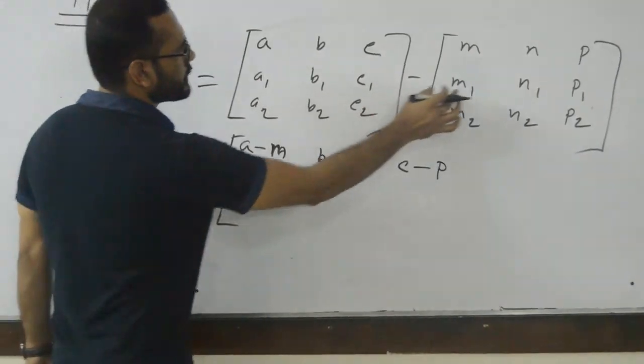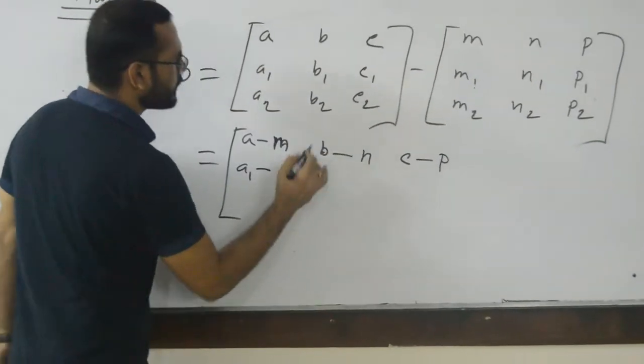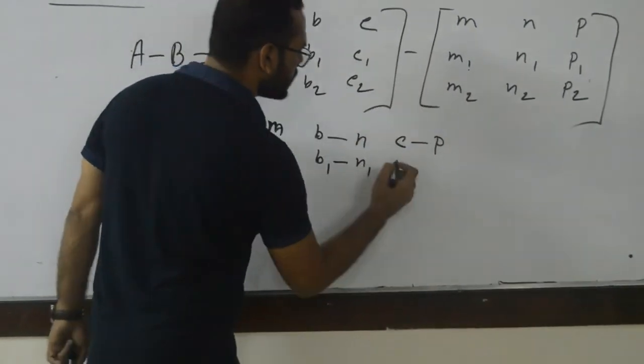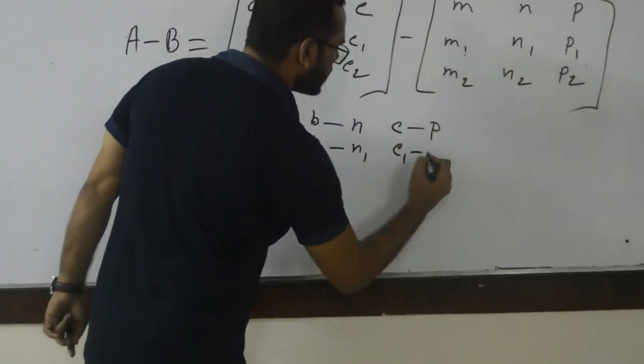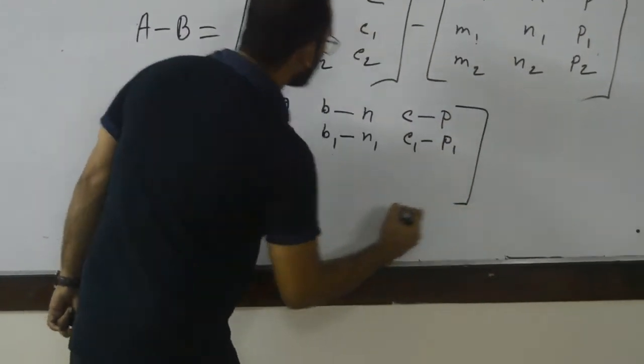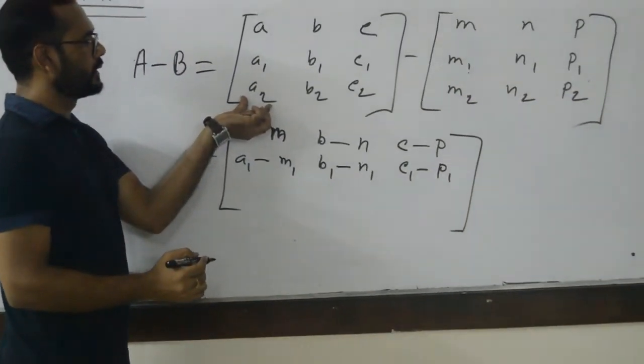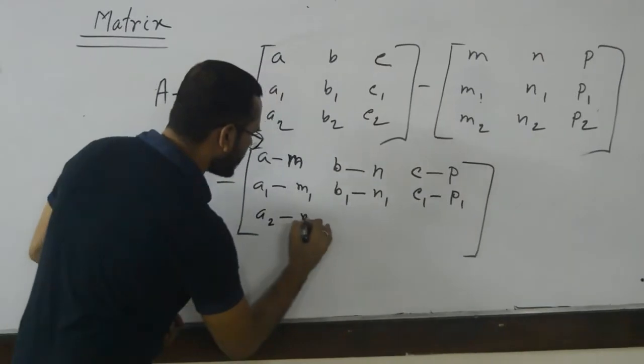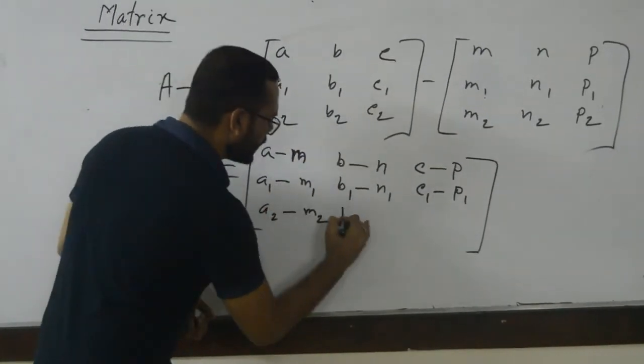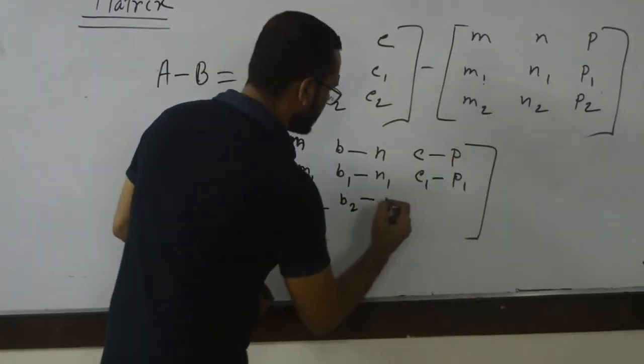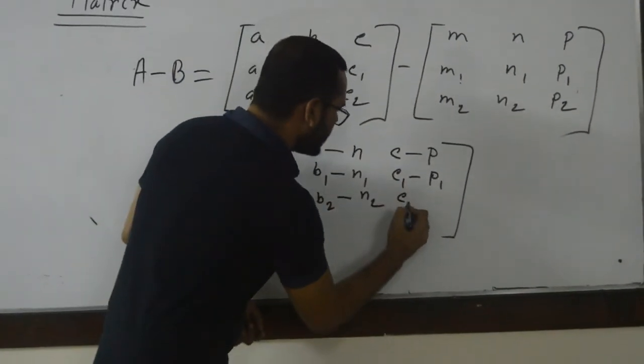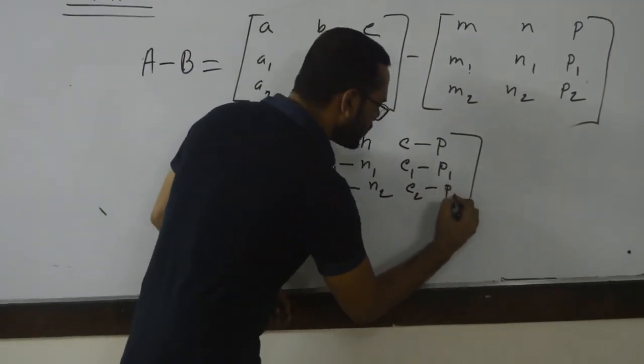Here, a1 minus m1, b1 minus n1, then c1 minus p1, and a2 minus m2, b2 minus n2, c2 minus p2.